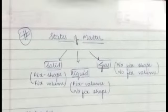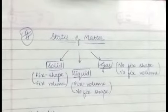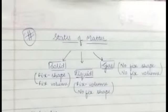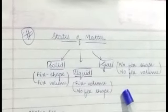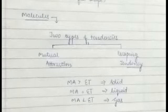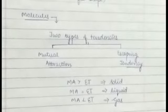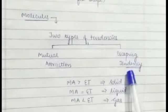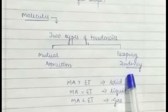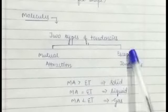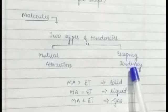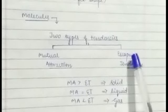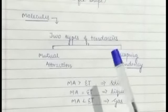And obviously jo hamare states hoti matter ki, in yeh kisi na kisi atom ya molecules se composed hoti hai. So molecules mein further hamaar paas do type ki tendencies a jati hai: first one is mutual attraction and secondly we have escaping tendency. Mutual attraction yani ki wo ek dusare ko attract kare hai and escaping tendency se yeh pata jata hai ki wo ek dusare se kitna door jaane ki kushish kare.